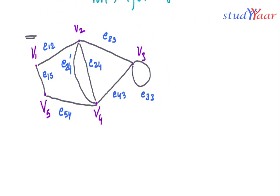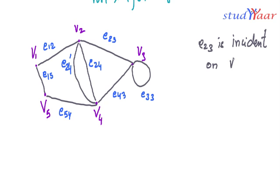Let's have an example. Using the same graph, e23 is incident on V2 because V2 is the terminal vertex for e23. It is also incident on V3. Another example: e33 is incident on V3, since it has only one terminal vertex.